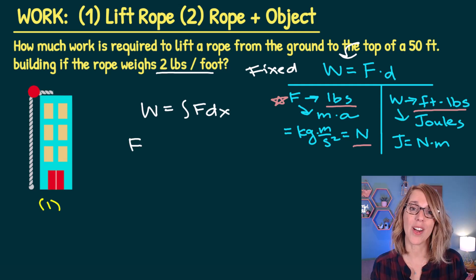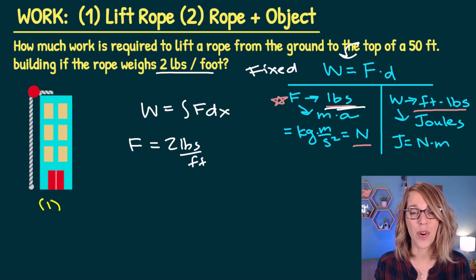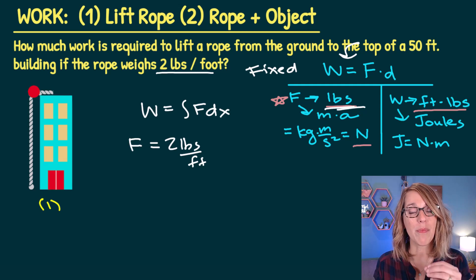That makes a ton of sense, right? Because the longer the rope, the heavier it's going to be. So I can start to put this force together by taking two pounds per foot. But I know that I need the unit of force to be in pounds, so I'm going to multiply this times the length of the rope.